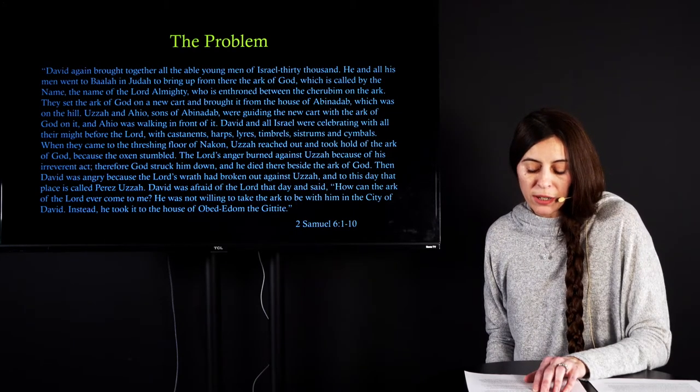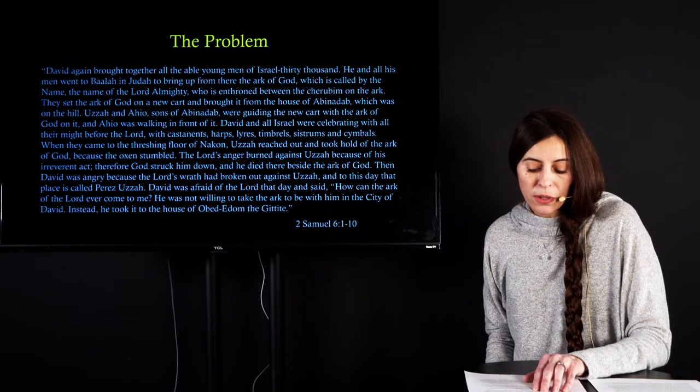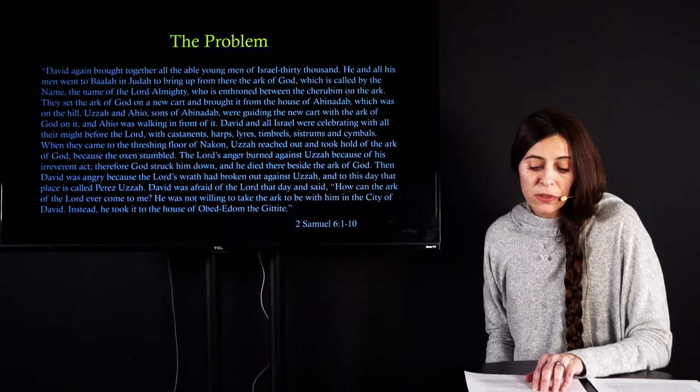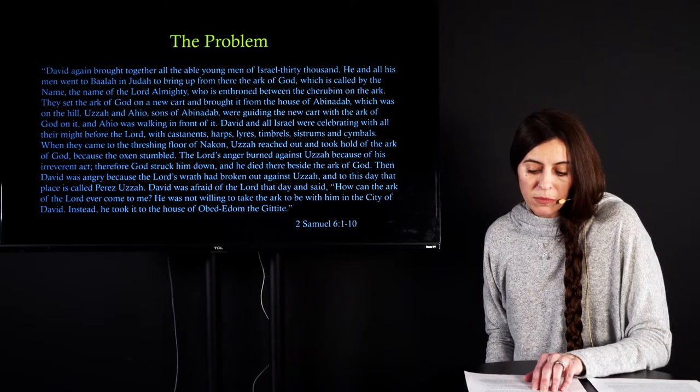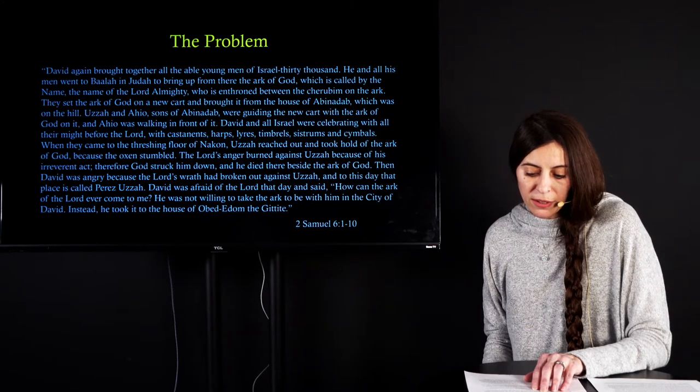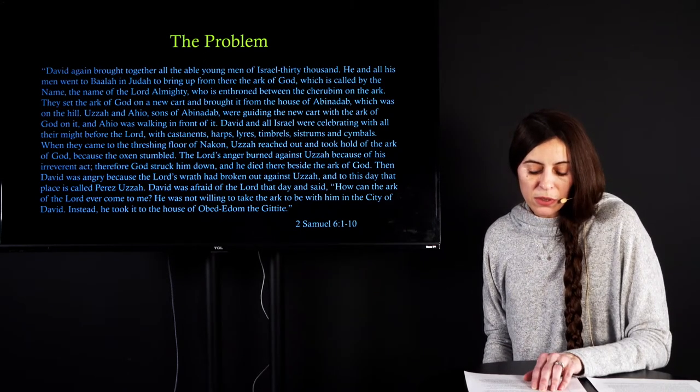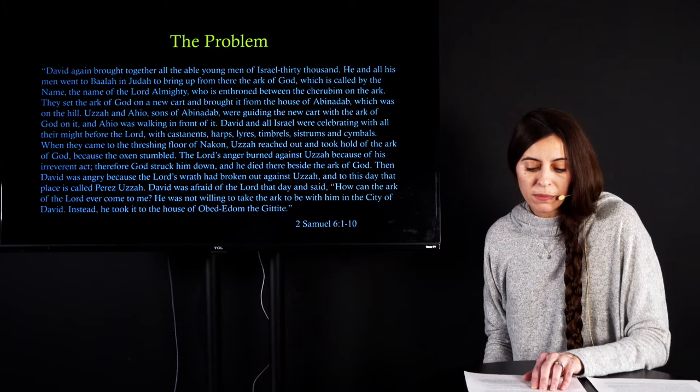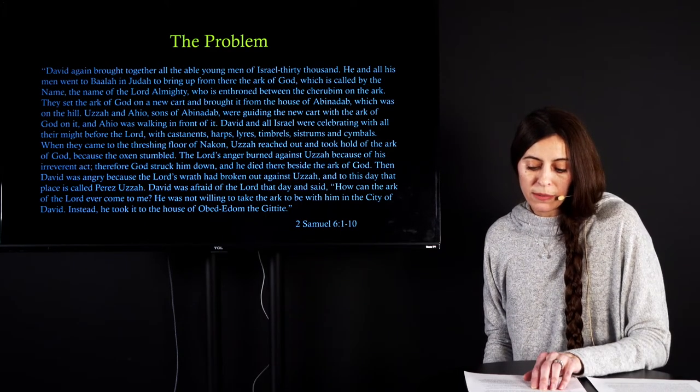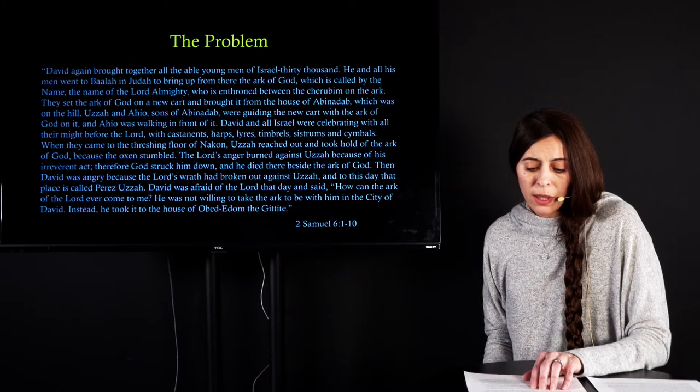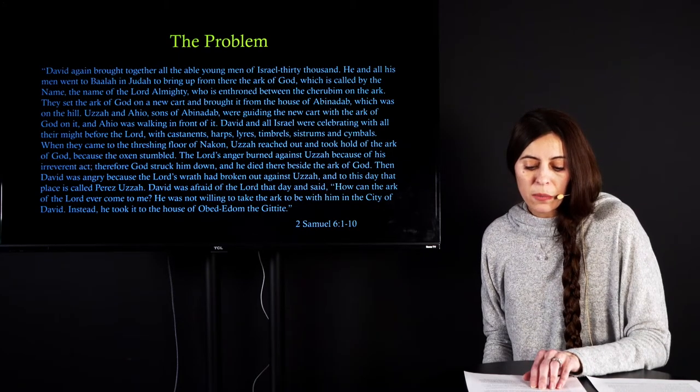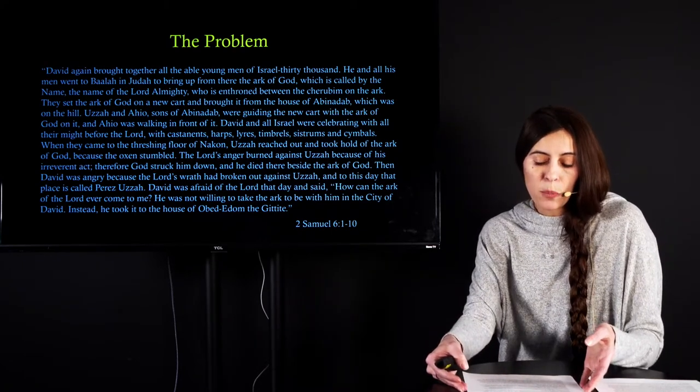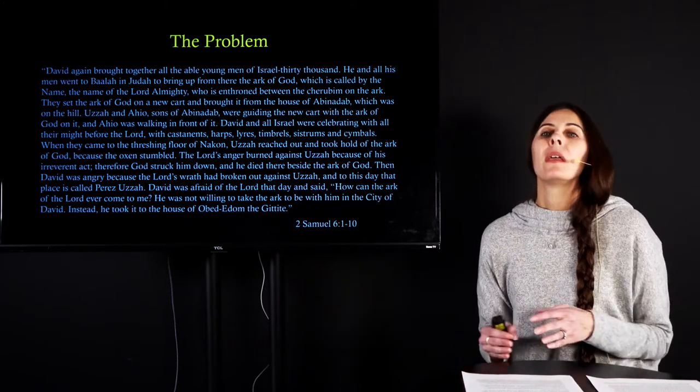David and all of Israel were celebrating with all their might before the Lord with casanets and harps and lyres and timbrels and cistrams and cymbals. And when they came to the threshing floor of Nacon, Uzzah reached out and took hold of the Ark because the oxen stumbled. The Lord's anger burned against Uzzah because of his irreverent act. Therefore, God struck him down and he died there beside the Ark. Then David was angry because of the Lord's wrath had broken out against Uzzah. And to this day, that place is called Per-Azah. David was afraid of the Lord that day and said, how can the Ark of the Lord ever come to me? He was not willing to take the Ark to be with him in the city of David. Instead, he took it to the house of Obinadim the Gittite.